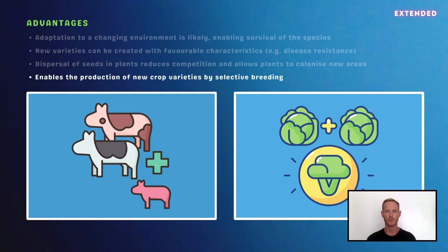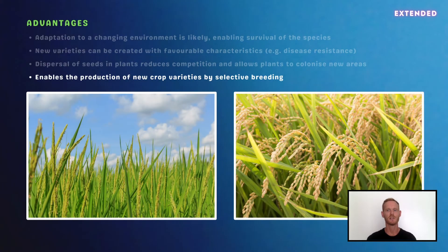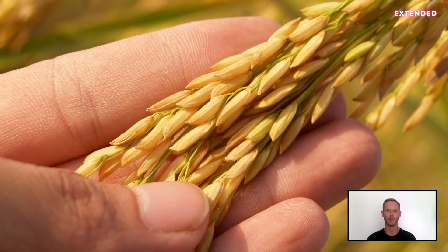Sexual reproduction also enables a practice called selective breeding, whereby two organisms with different characteristics are cross-bred to produce offspring with a new and desirable combination of traits. For example, if a disease-resistant strain of rice is bred with a variety that produces a lot of grain, the first-generation offspring should be both disease-resistant and productive, assuming that the useful characteristics are controlled by dominant genes.